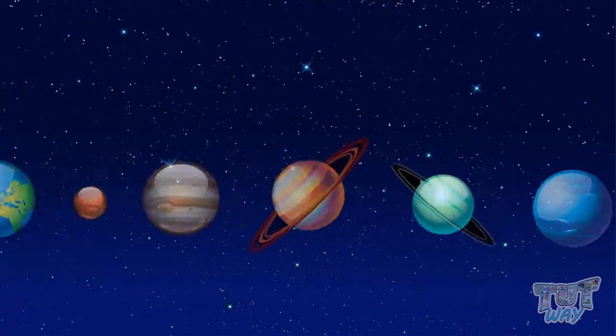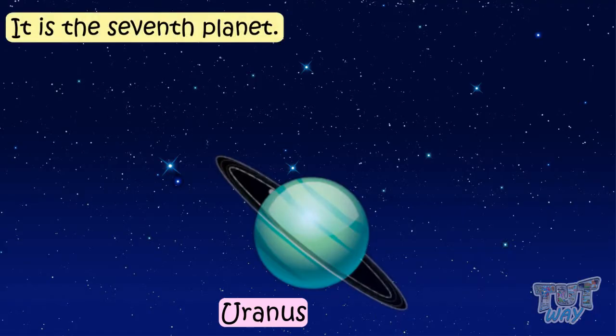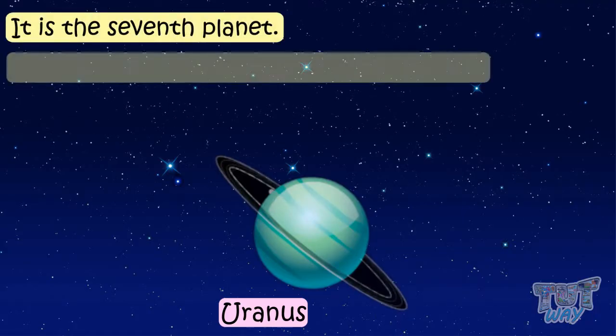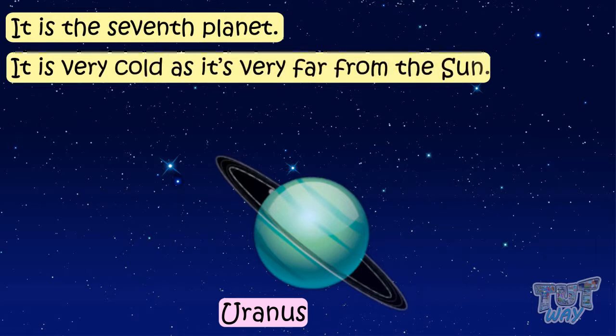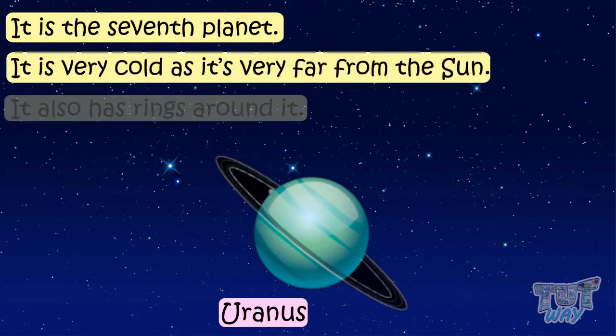Uranus. It is the seventh planet. It is very cold as it's very far from the Sun. It also has rings around it.